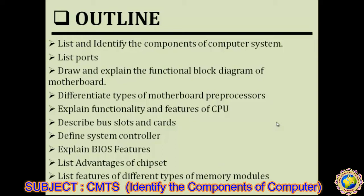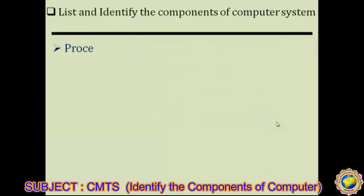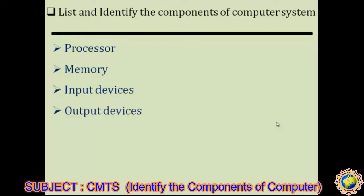Let's start with the first topic — list and identify the components of the computer system. A computer is made up of a processor, memory, input devices, and output devices. The processor and memory reside in the CPU, while input and output devices are external. Input devices include the keyboard and mouse, and output devices include the monitor and printer — any device where you can see the output of a process.